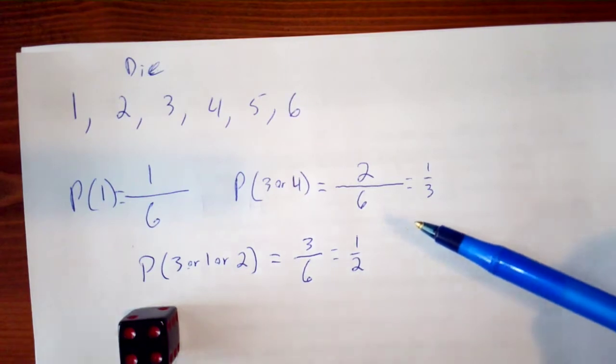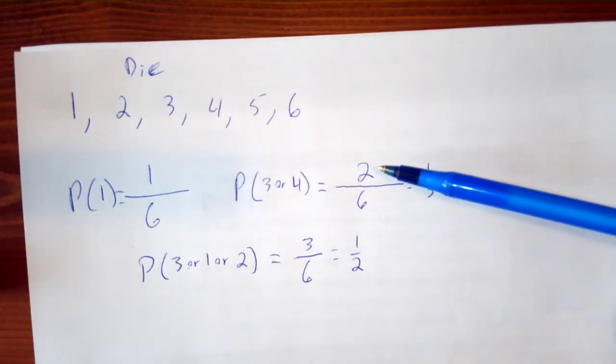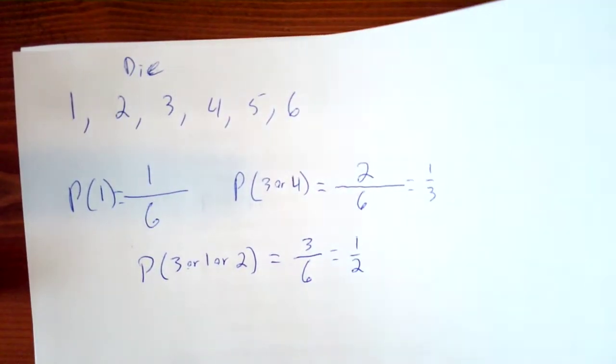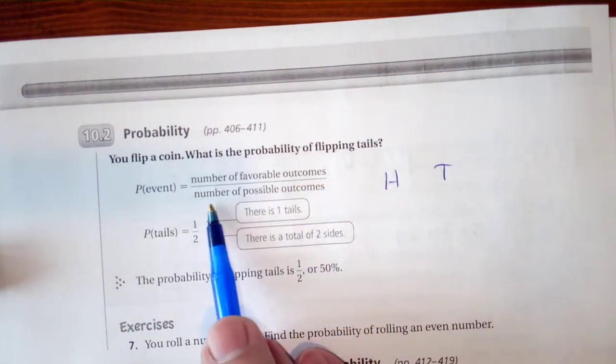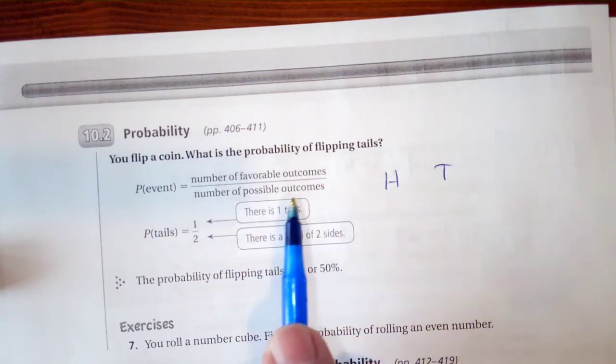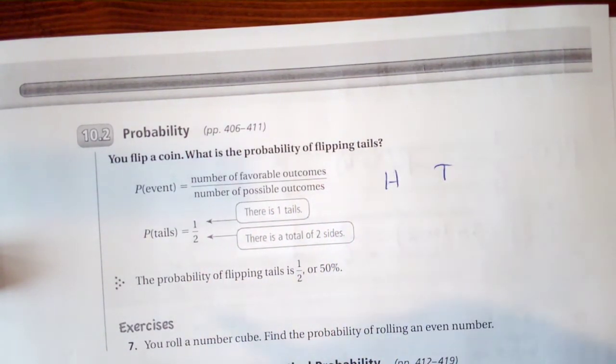So when we're talking about probability, we're going to take our number of favorable outcomes over our number of possible outcomes and put it into a fraction form.